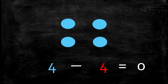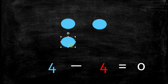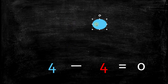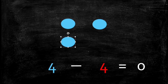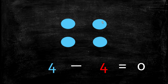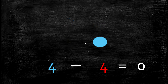Looking at our subtraction fact: if we have 4 — 1, 2, 3, 4 — and we take 4 away — 1, 2, 3, 4 — how many do we have left? 0. We have 0 left. So 4 minus 4 equals 0. Because we have 4 and we take 1, 2, 3, 4 away, and we're left with 0.